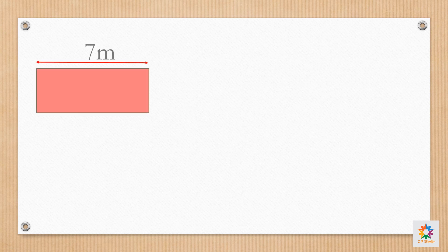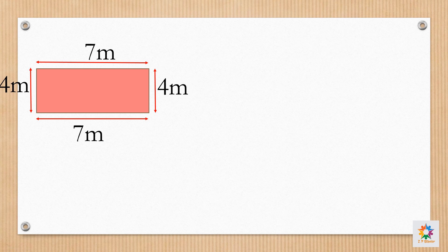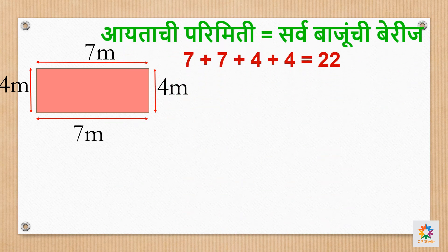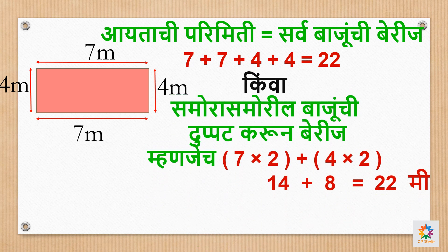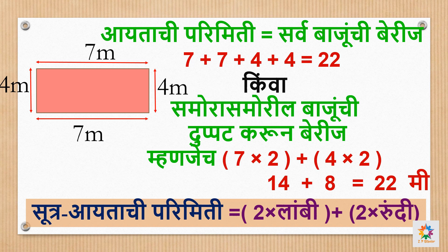बालमित्रांनो, यां देखा. तुम्हाला आयत चाकृती दिसते. आयताचे काय विशेष? तर आयताचे समोरासमोरील बाजू हे सारख्या मापाच्या आहेत. म्हणून आपण या आयताची परिमिती काढू. परिमिती म्हणजे बाजूंची बेरीज म्हणून आपण 7 आदिक 7 आदिक 4 आदिक 4. समोरासमोरच्या सारख्या बाजूंची लांबी दुप्पट करू शकतो म्हणजेच 7 गुणिले 2 आणि 4 गुणिले 2.